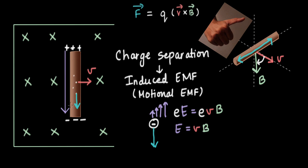Now the potential difference across the ends of this conducting rod — delta V — equals the electric field strength multiplied by the length of the conducting rod: E times L. Substituting E = VB, this gives delta V = VBL. And that is the magnitude of the Motional EMF.